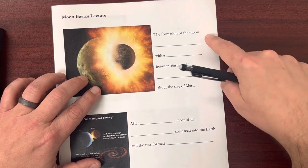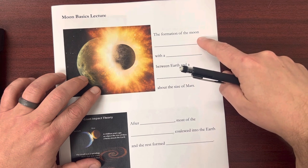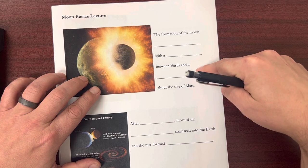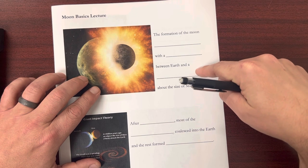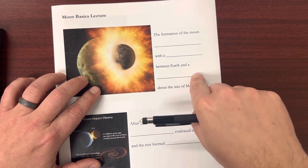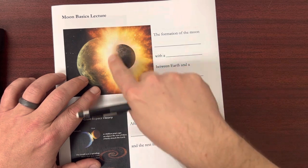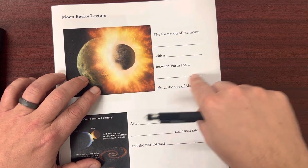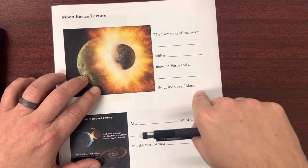So the formation of the moon started with a collision between Earth and what's called the protoplanet. So this small Mars-size planet was called a protoplanet, about the size of Mars.